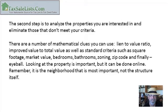The second step is to analyze the properties you are interested in and eliminate those that don't meet your criteria. There are a number of mathematical clues you can use — things like lien-to-value ratio, improved value to total value — as well as standard criteria such as square footage, market value, bedrooms, bathrooms, zoning, and zip code. And finally, eyeball: looking at the property is important, but it can be done online. Remember, it is the neighborhood that is most important, not the structure itself.